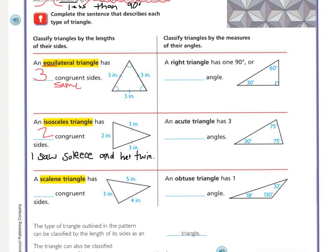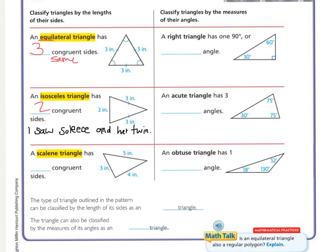Moving on, the third triangle is the scalene triangle. How many sides are congruent? We have a three-inch, a four-inch, and a five-inch line, so none of them are congruent. When I think of scalene, I always think about the lean part — no matter which way you have the triangle, it's always going to be kind of leaning to one side or the other because none of them are even. Equilateral, isosceles, and scalene all classify triangles by their sides.